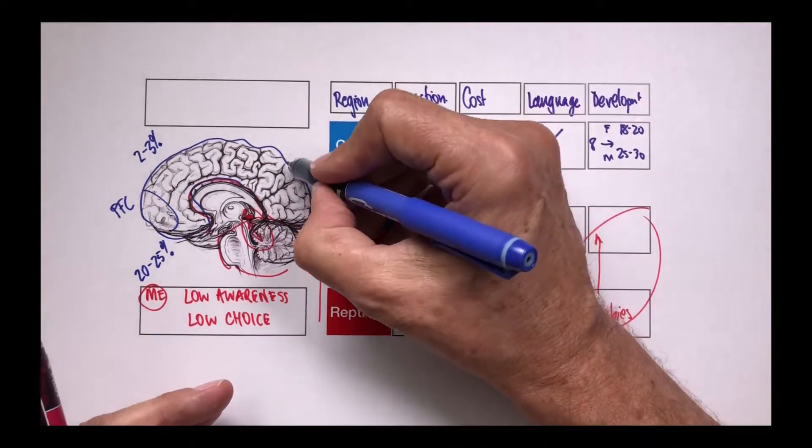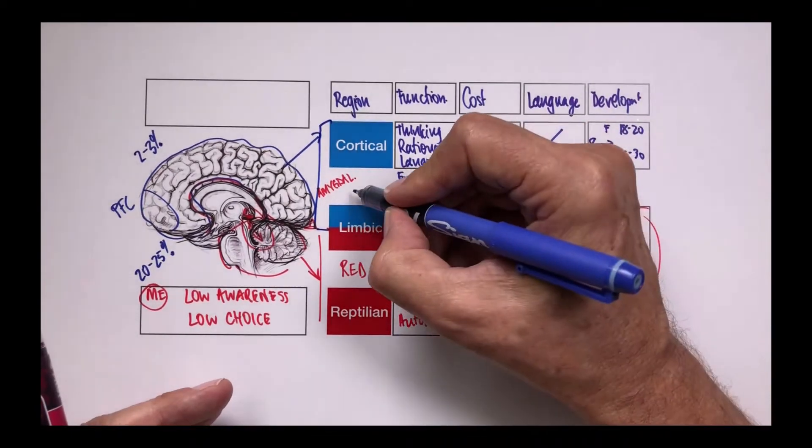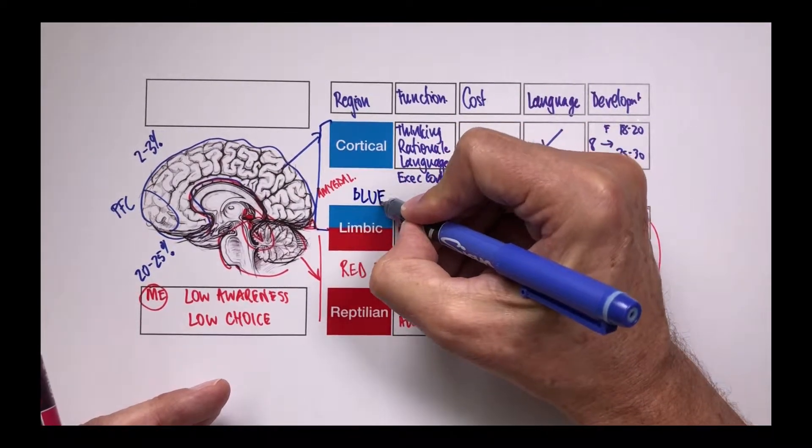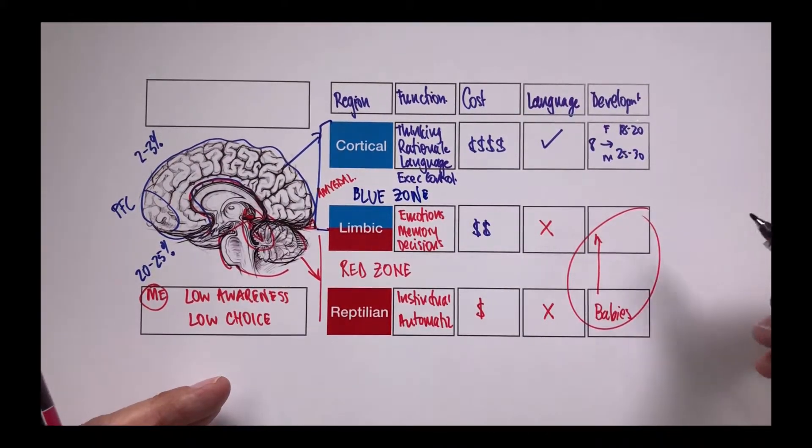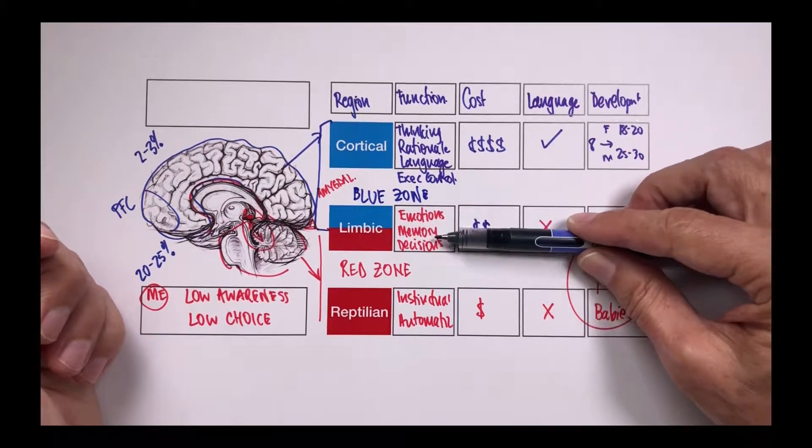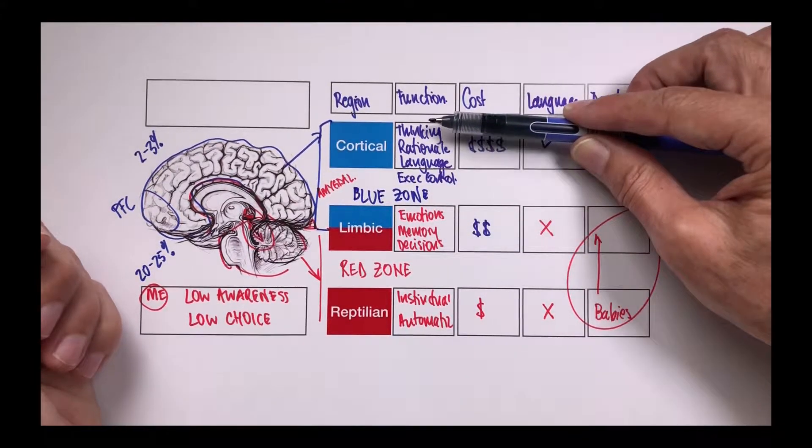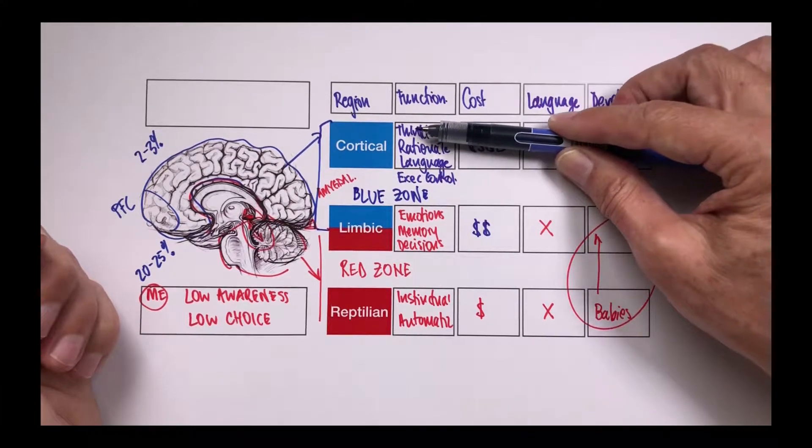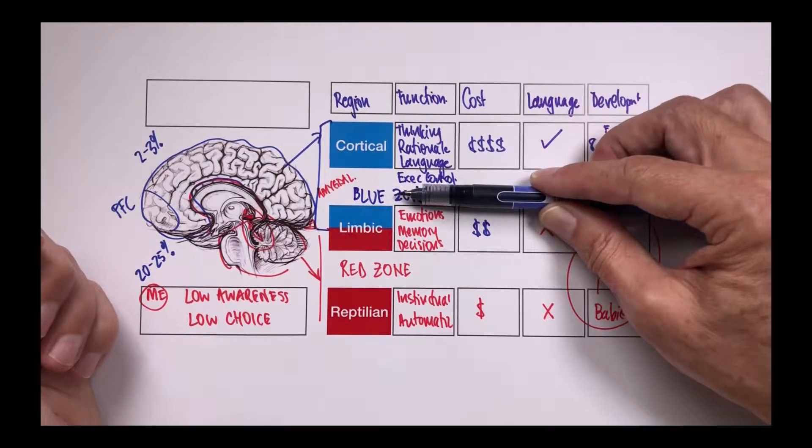When we start to engage with the limbic and the cortical brains together, then we are in what we call our blue zone. In the blue zone, we have availability of our decisions, our memory and our learning and our emotions in combination with the thinking, the rationale, language and the executive control. This is a very mindful state.